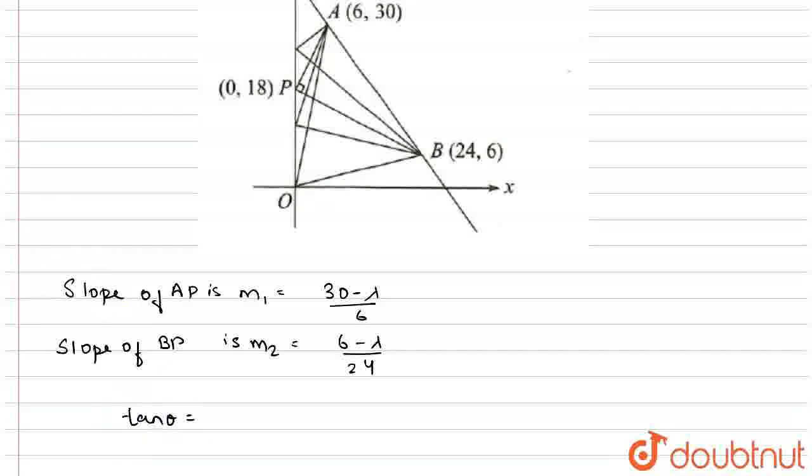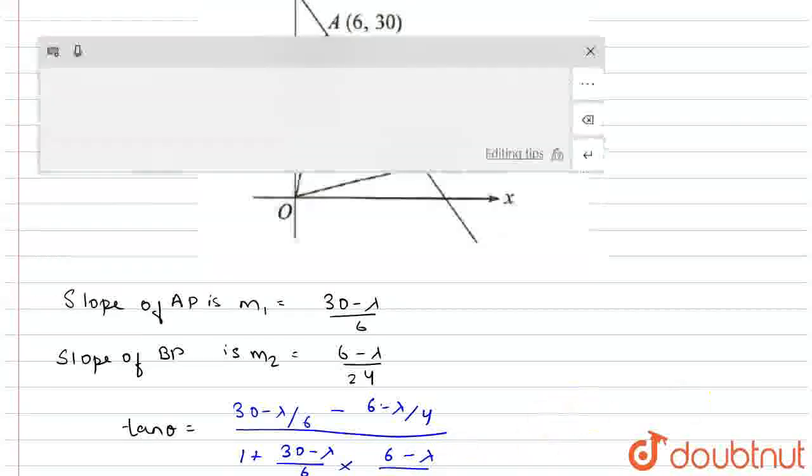Now put the values. That is 30 minus lambda by 6, it is minus, sorry not plus, minus 6 minus lambda by 4, divided by 1 plus 30 minus lambda by 6 into 6 minus lambda by 4.